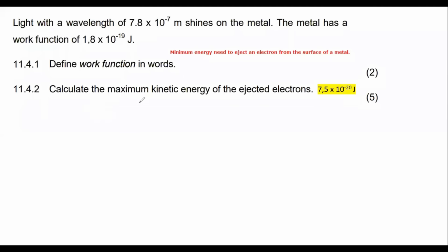Question 11.4.2: Calculate the maximum kinetic energy of the ejected electrons. If you understand the photoelectric effect quite well, and this formula is on your formula sheet, the main formula that governs this entire chapter is E = W₀ + Eₖ. That is the main formula for this entire chapter.